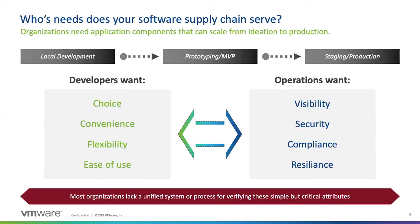Organizations have been weighing this as a balance for some time. Developers often pine for choice, convenience, and flexibility in tools and components. Operations focuses on resilience, security, and compliance with organizational or regulatory policy. Most organizations lack a unified system that gathers what developers want and what operations wants and helps move applications from prototyping all the way through staging and production.